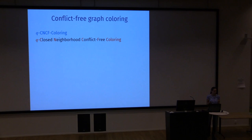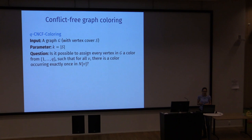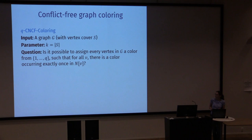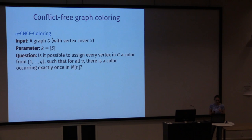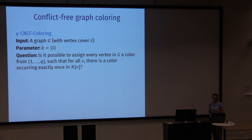On input we're given a graph, and because vertex cover will be the parameter for the rest of my talk, I also assume that we're given a vertex cover of this graph. The question is whether we can colour this graph — colour every vertex with one out of Q colours — such that if you look at the close neighbourhood of any vertex, there is a colour that occurs exactly once. So basically every close neighbourhood has one uniquely coloured vertex.